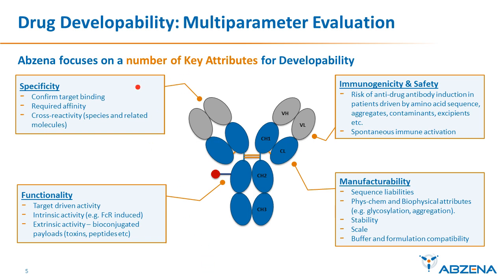At Abzina we evaluate a number of key attributes as part of the developability assessment, aligned to the target product profile that we want to achieve. We look at specificity — binding of the target and cross-reactivity to other species. We look at functionality, including intrinsic and extrinsic or added-on activity through bioconjugation. We look at immunogenicity, safety, and manufacturability, including stability and buffer parameters. These cover the 'can we make it' and 'does it work' questions with some elements of safety evaluation.